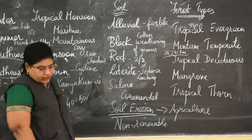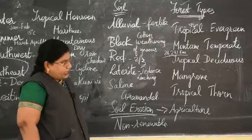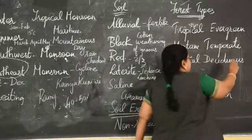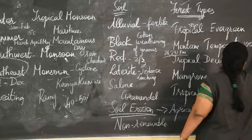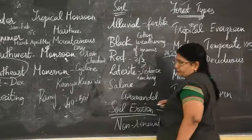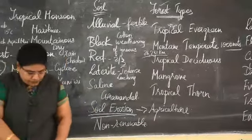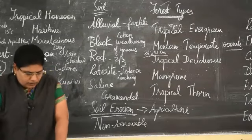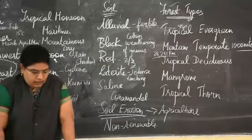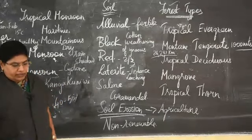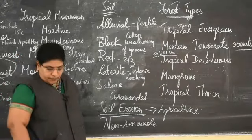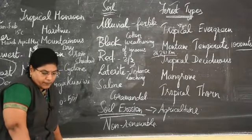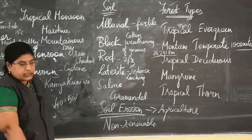Mountain temperate forests are found in Anaimalai, Nilgiris, and Kalani Hills at a height of 1000 meters. They are also called sholas. These trees are evergreen and usually very short. The types of trees found here are Nilgiris champa, rose apple, and others.